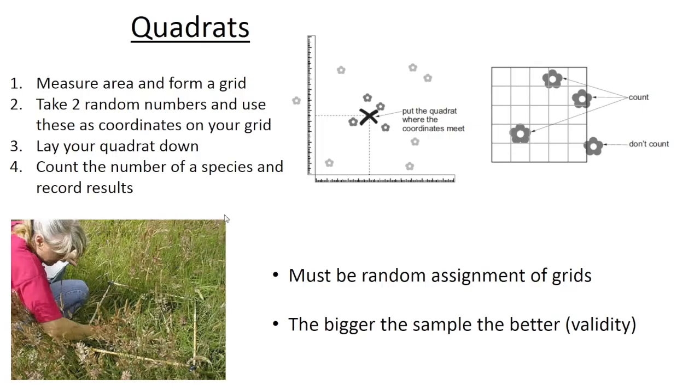You need to know for this topic that we need to sample areas to get an idea of how biodiverse an area is. One way we can do this is by using a quadrat. Down here this lady has a quadrat. It's literally a pole system or metal square that forms a grid you place on the ground, and you count the number of species or individuals within a species within your grid.